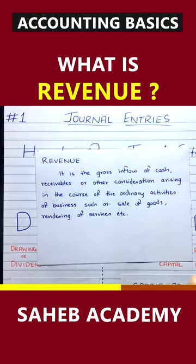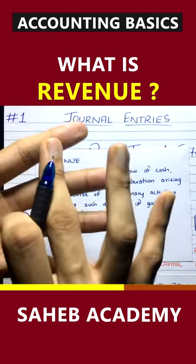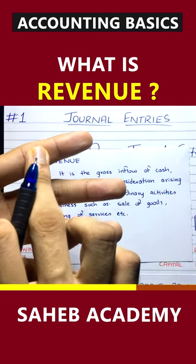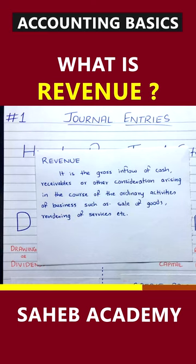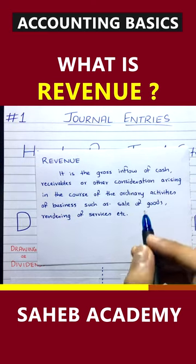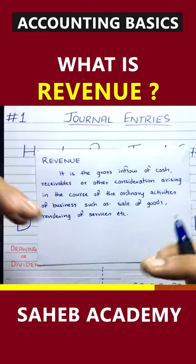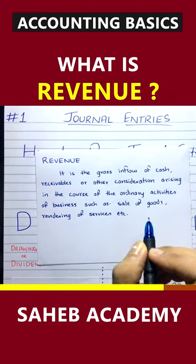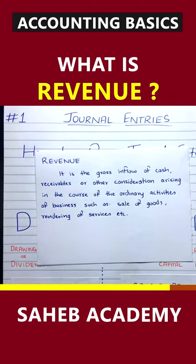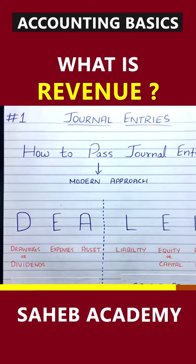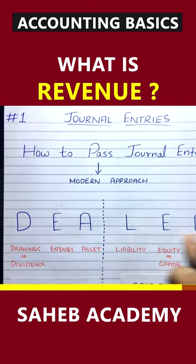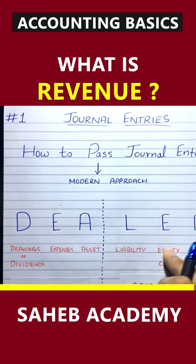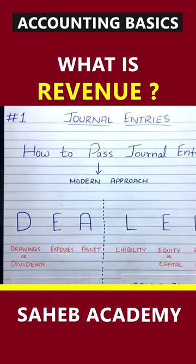There are so many things — discount received: if you're purchasing something and you get a discount, that's also your revenue. All these gains and benefits which you get, all these income sources are revenue, but mostly sales is revenue. So now we've understood all these terms: drawings, expenses, asset, liability, equity or capital, and revenue or income.